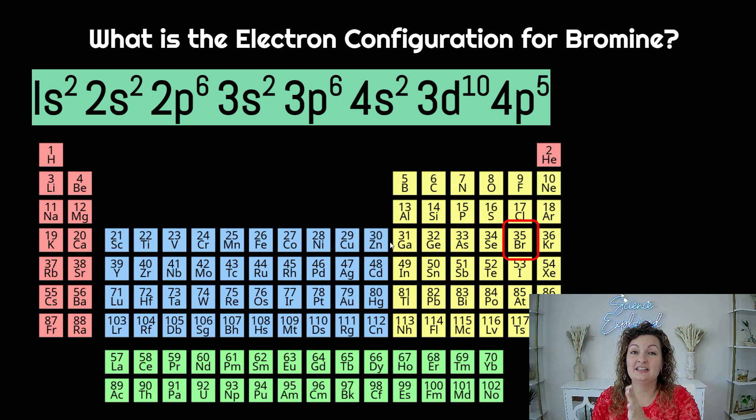Now we're going to enter back into the P's, but the P is at a normal energy level, just like the S. So we're stepping up an energy level to four. So 4P, and we're going over one, two, three, four, five to get to bromine. So 4P5, this is it.